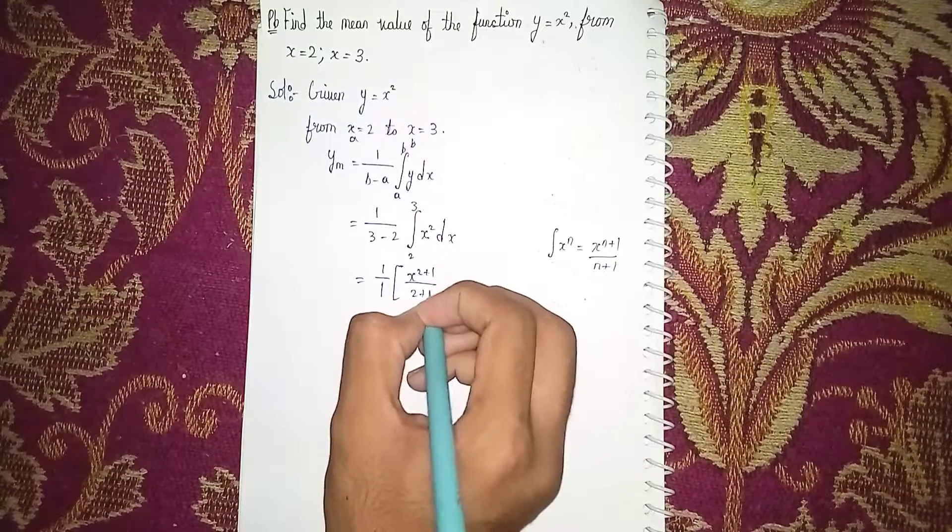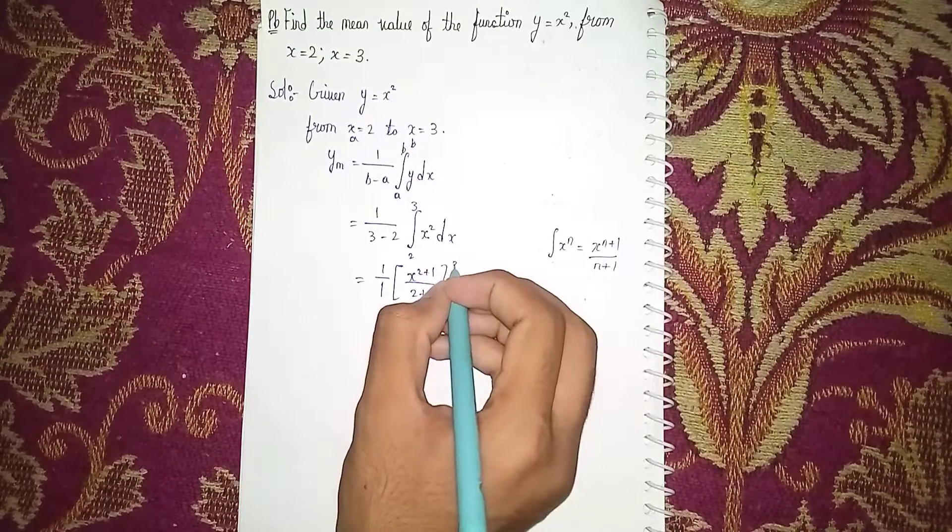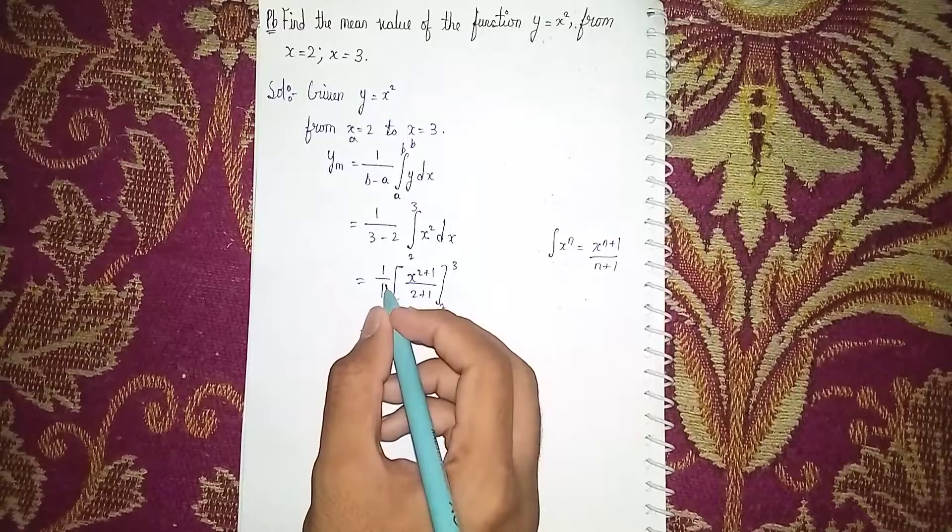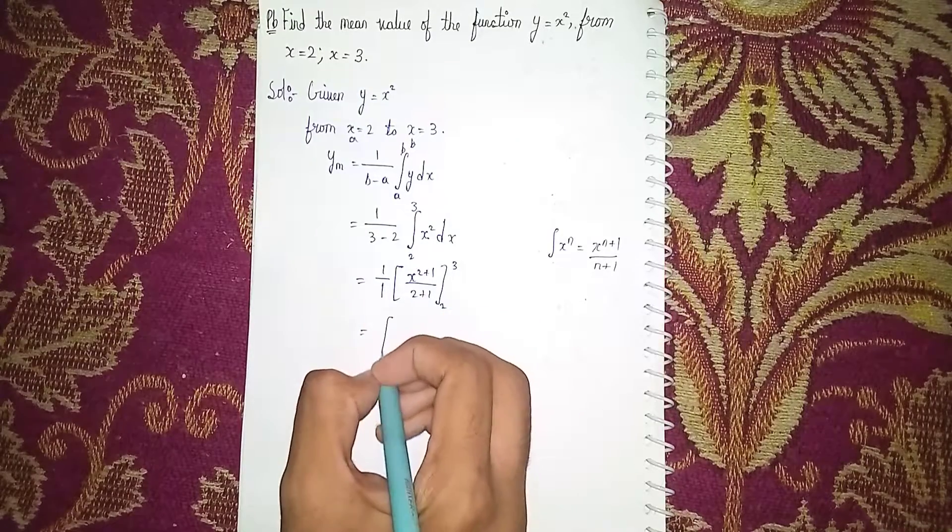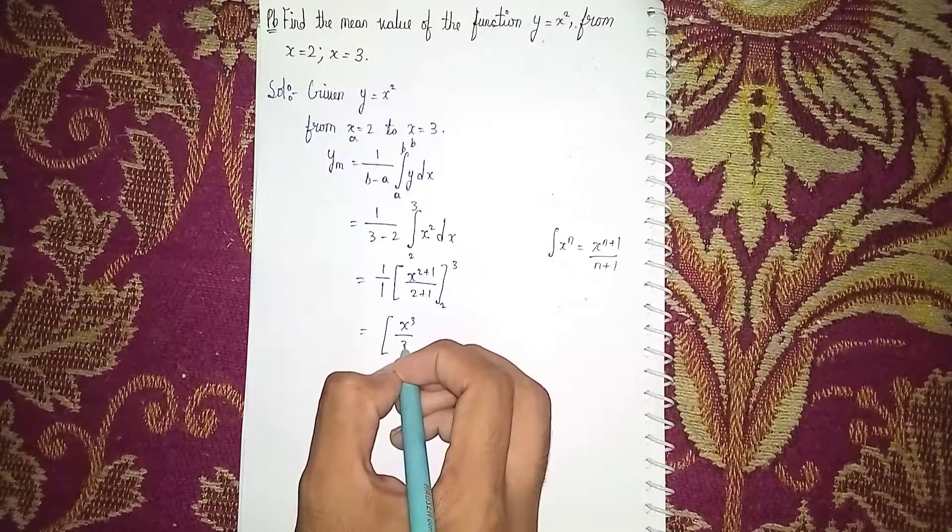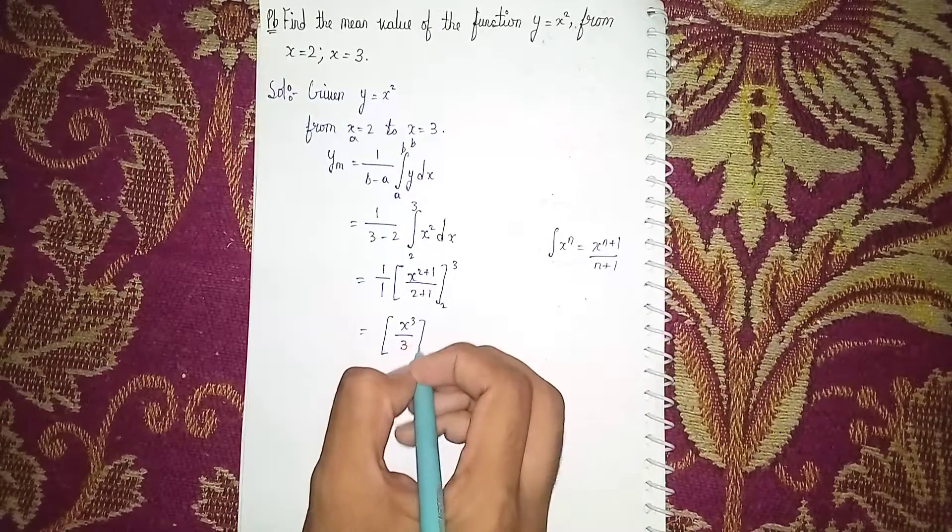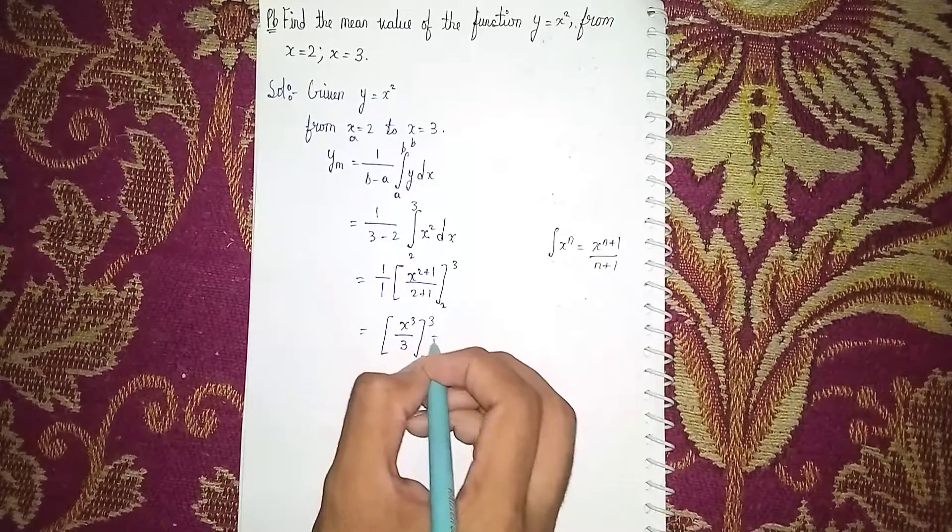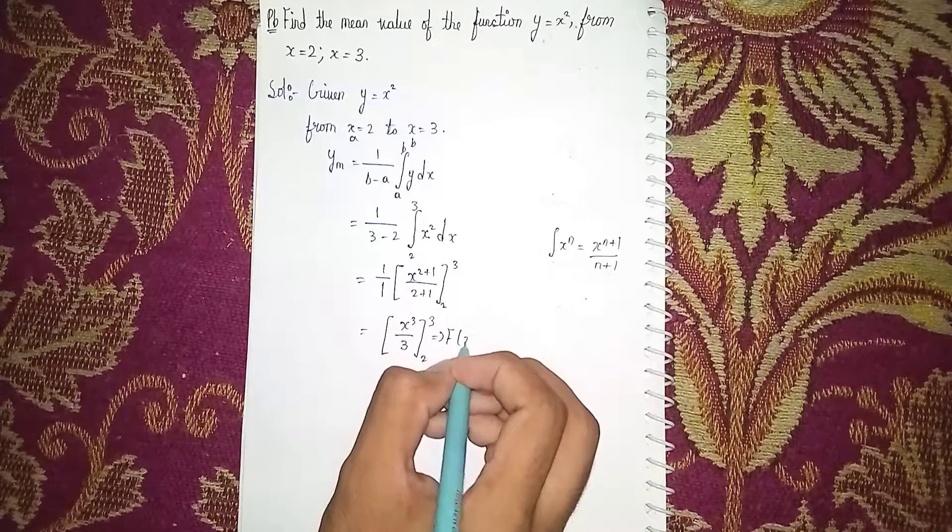So 1/1 is just 1, so the function is x³/3 from limit 2 to 3. Now apply the limits.